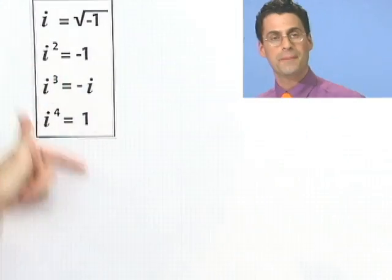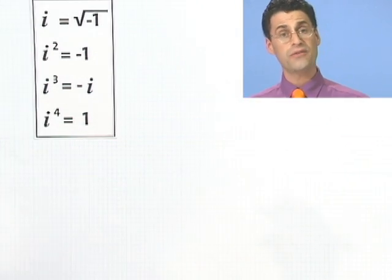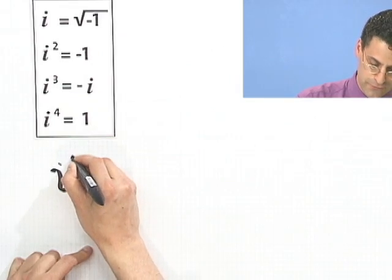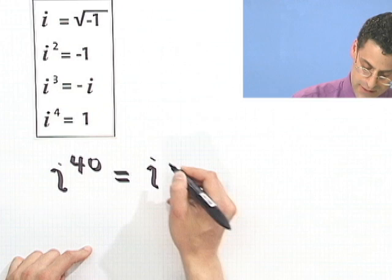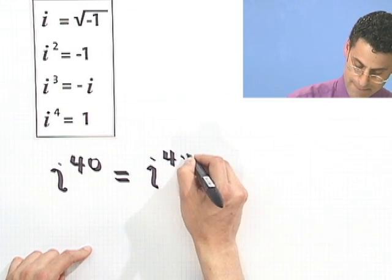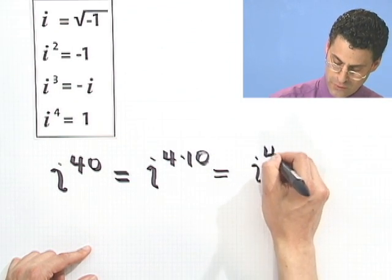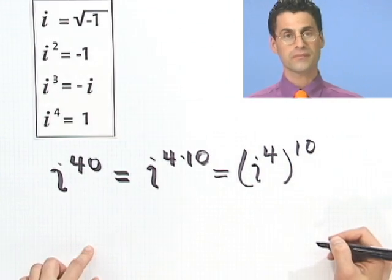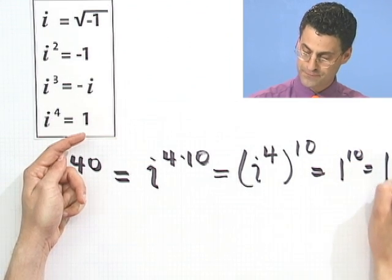The point is that you can now find any power of i that you want. All you've got to do is figure out where you land on this chart. The chart has four entries, so all you've got to do is take the exponent and divide it by four and see what the remainder is. For example, i to the 40th power — notice that's 4 times 10 in the exponent. Using laws of exponents, that's i to the fourth all raised to the tenth. i to the fourth is 1, so this is just 1 to the 10, which equals 1.